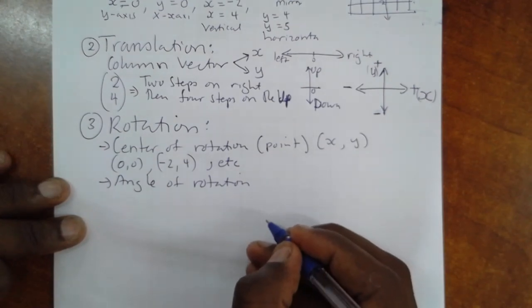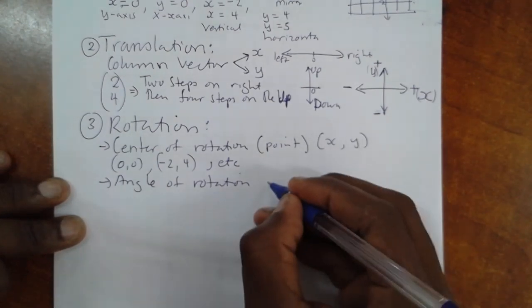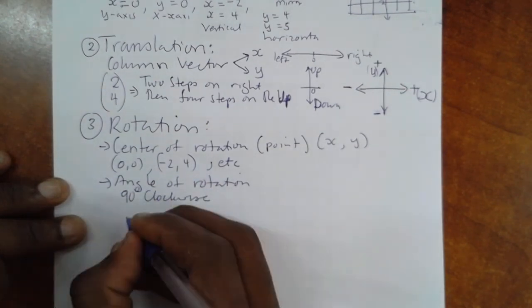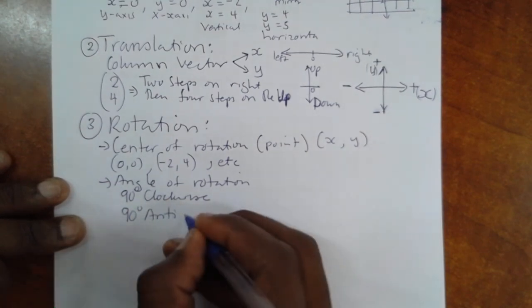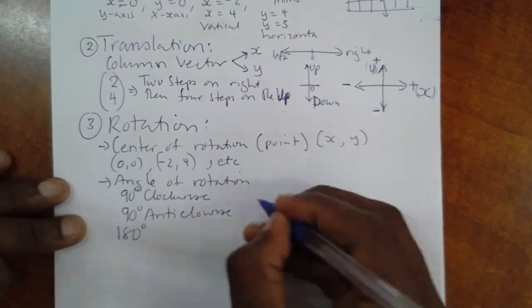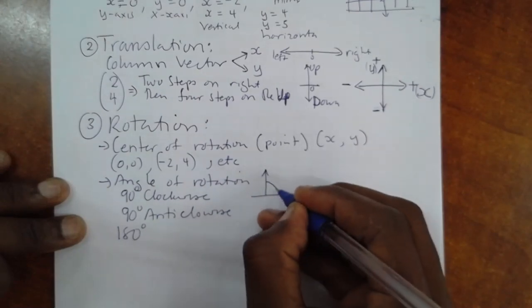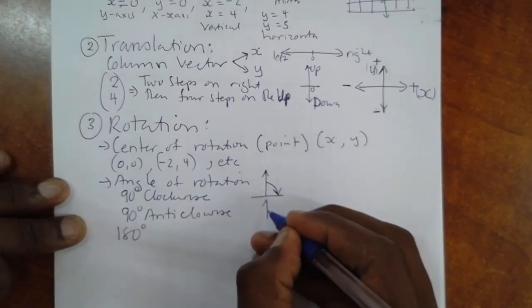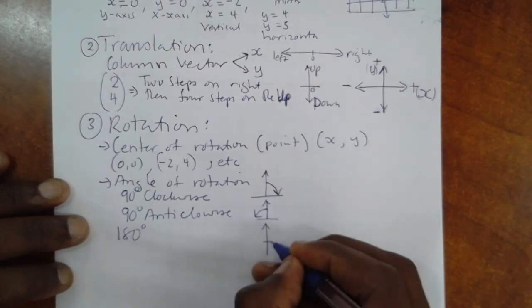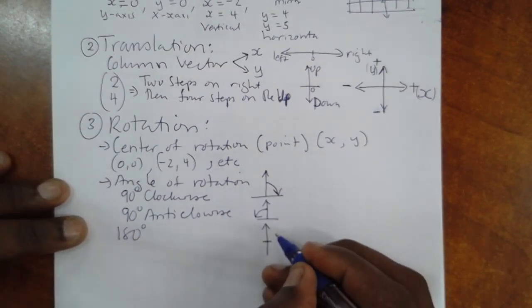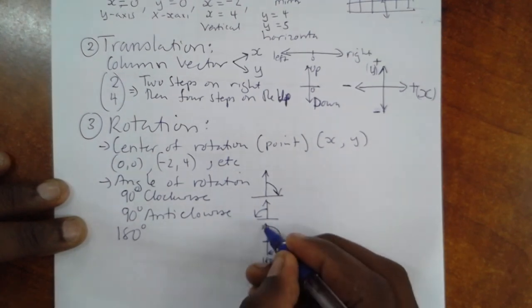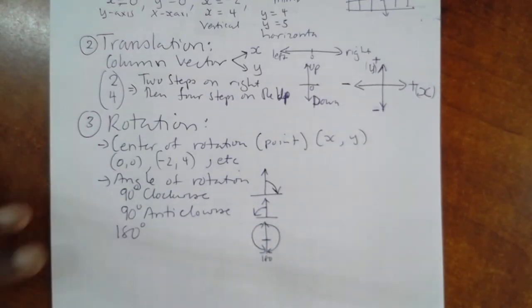We have three main angles which we use all the time. The first one is the 90 clockwise. The second one is the 90 anti-clockwise. And the last one is 180 degrees. When we talk about 90 clockwise, we mean this direction. When we talk about 90 anti-clockwise, we mean that direction. But when we talk about 180, 180 doesn't have any restriction because if I move this direction, 180 will be down there. Or if I move this direction, 180 will be on the same position.